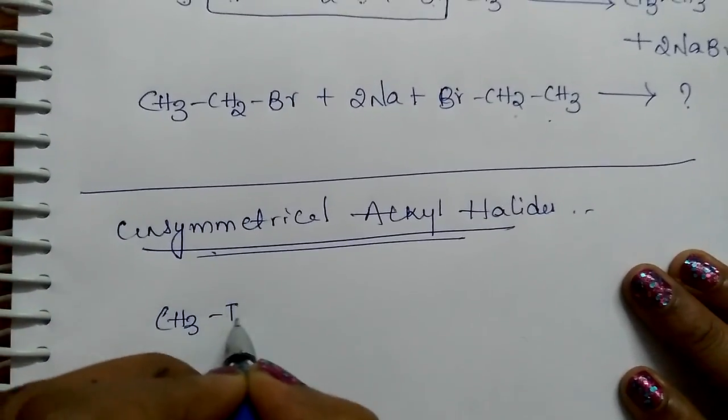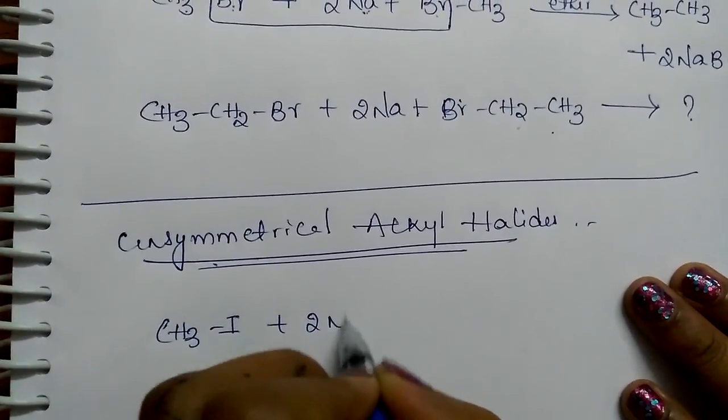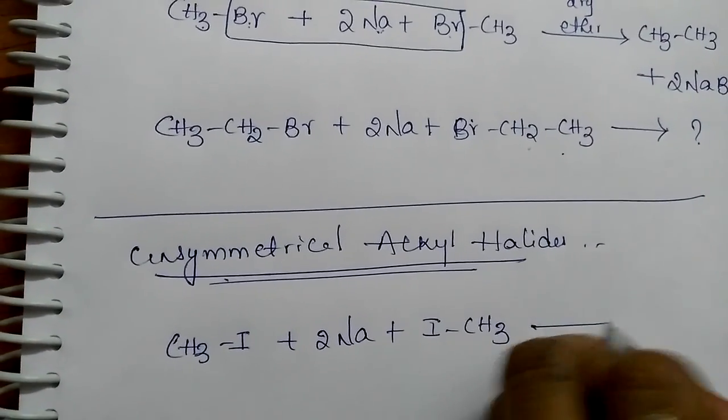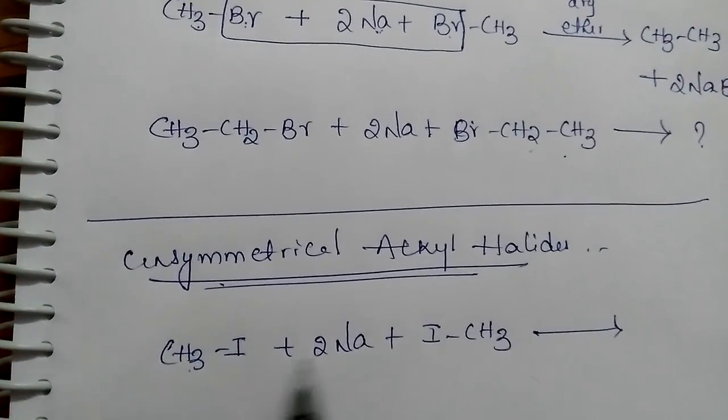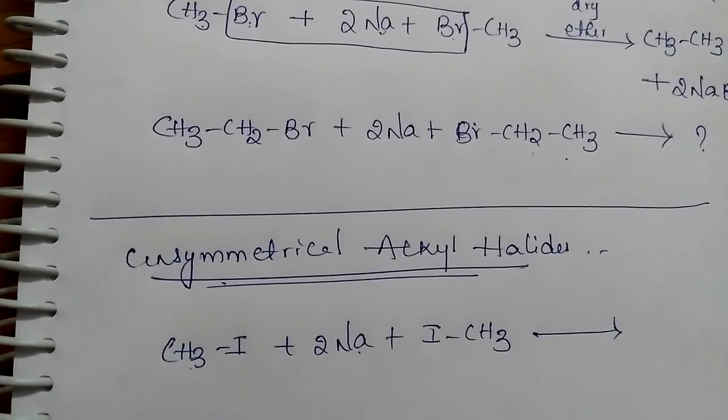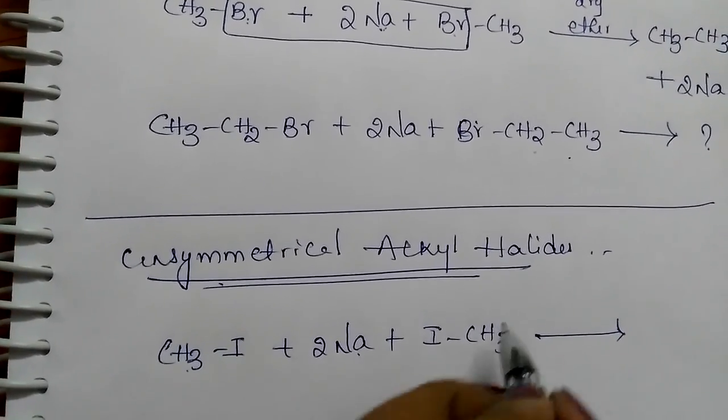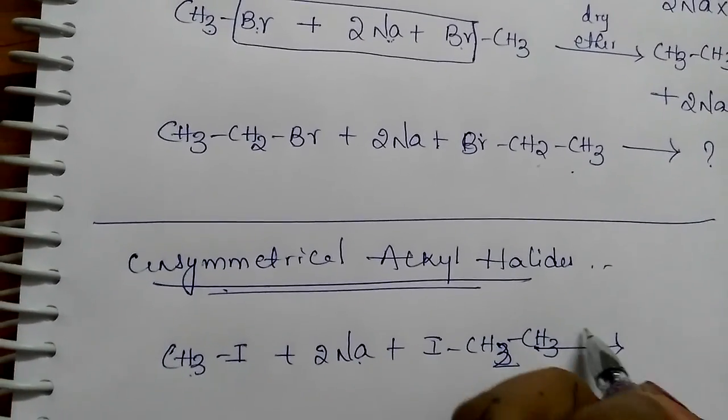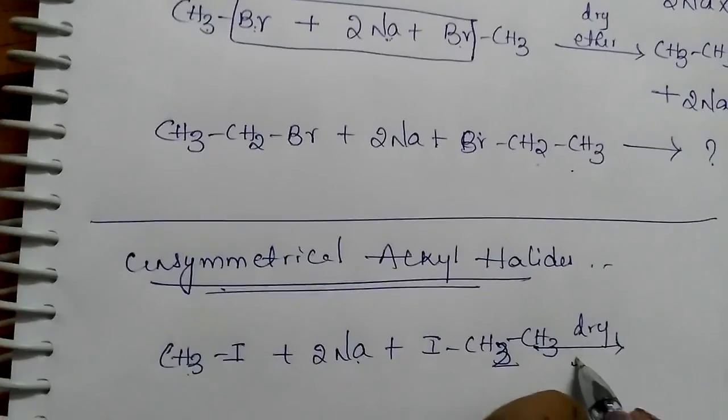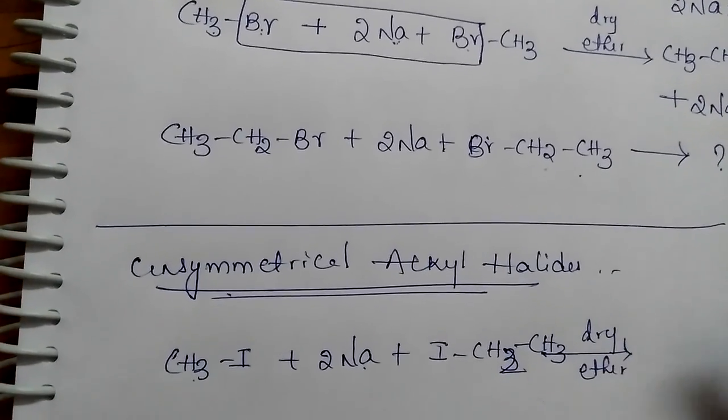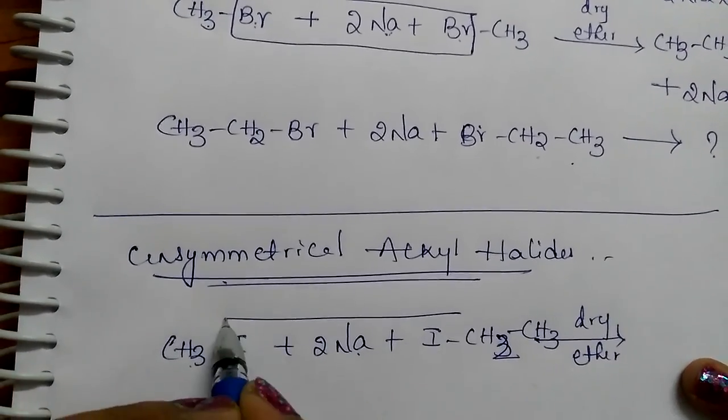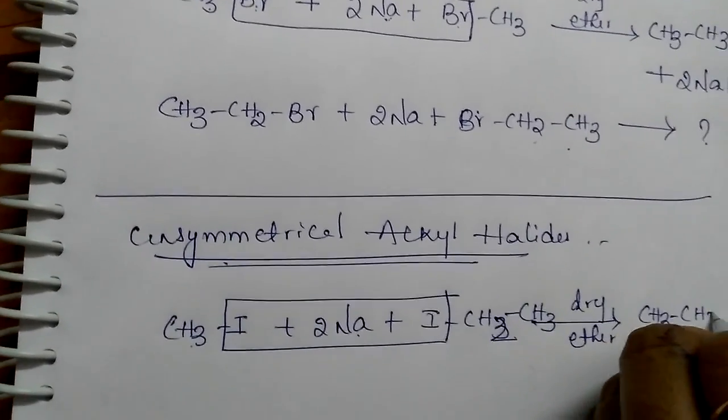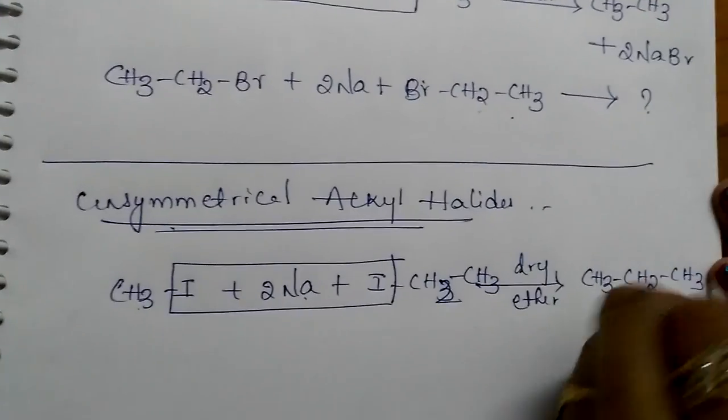Methyl iodide reacts with sodium and take another alkyl halide like ethyl iodide, both should be different. Now what is the product? What is the expected product? 2 moles of NaI will be liberated and we will be getting CH3-CH2-CH3. Propane is formed.